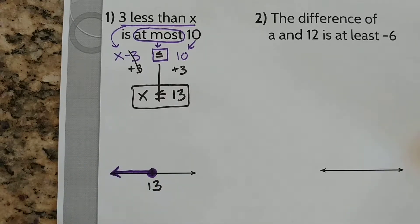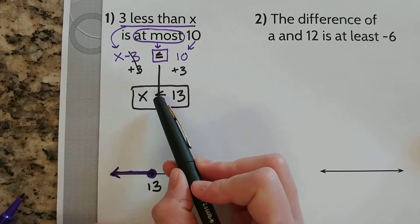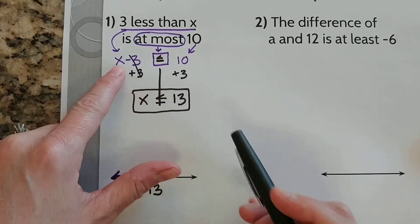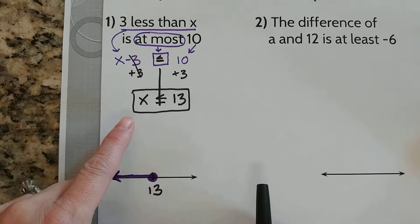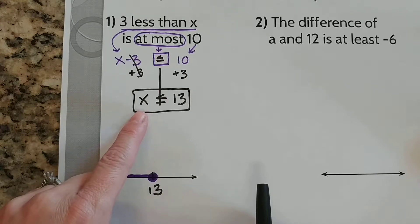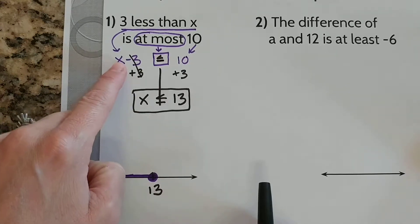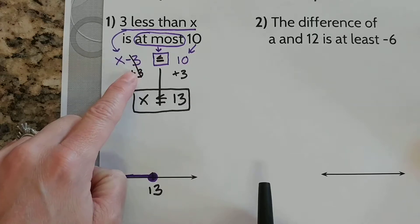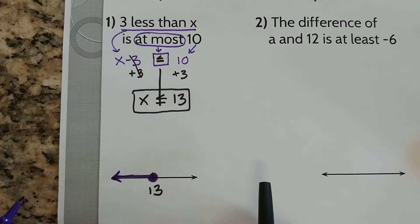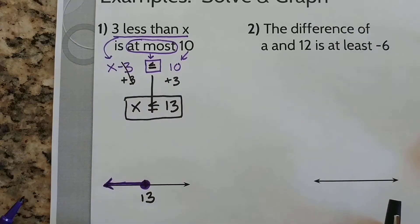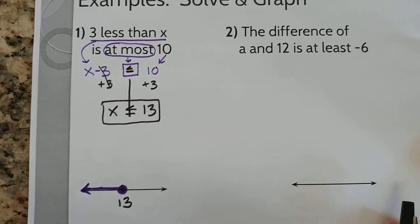I could also check to see if my answer is right. I could pick a number that's less than or equal to 13 and put it back in for x. I know that 10 is less than or equal to 13, so I could plug 10 in — 10 minus 3 is 7, and 7 is less than or equal to 10. So that works. Let's try the next one.